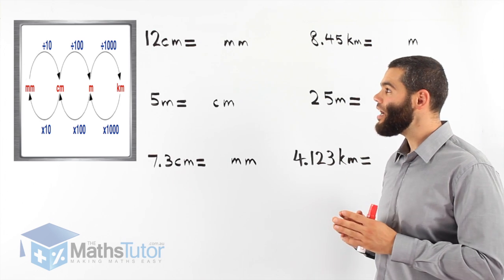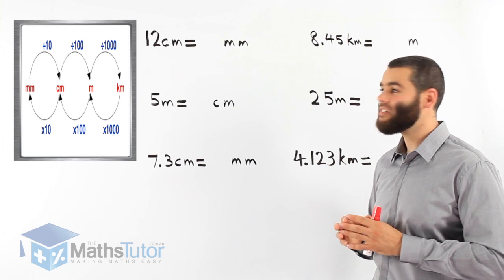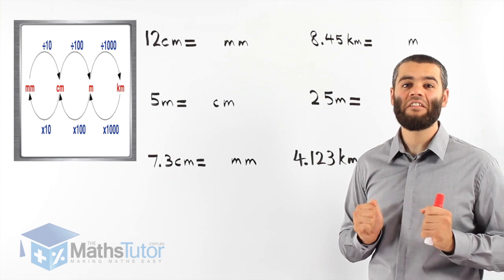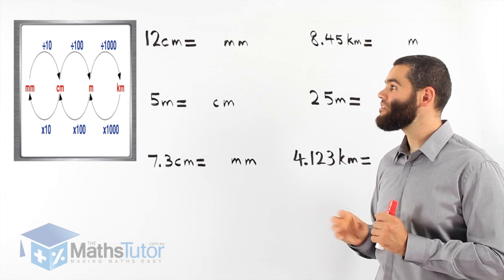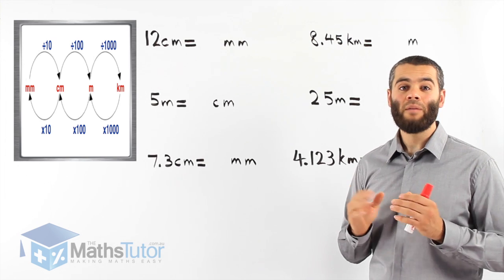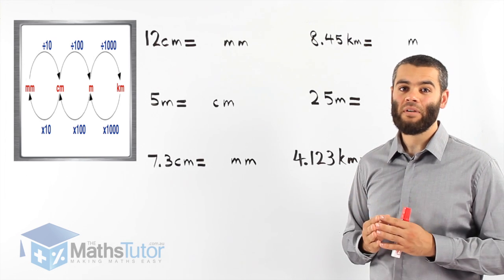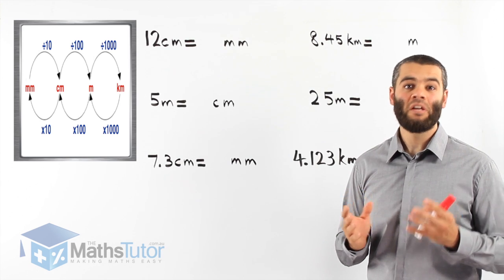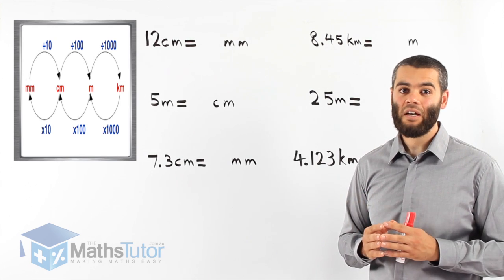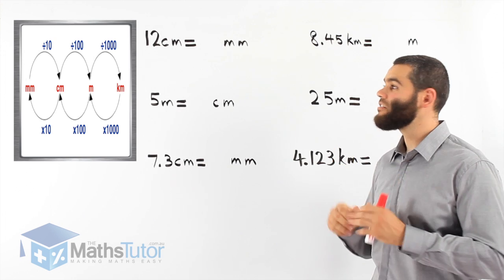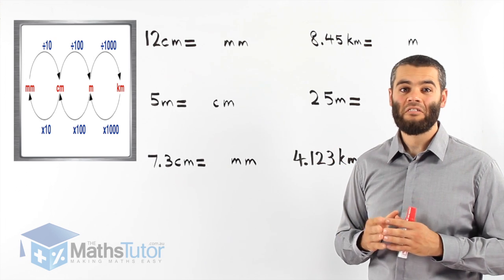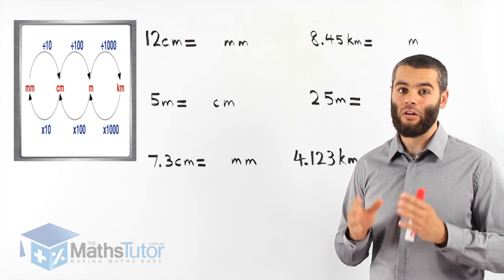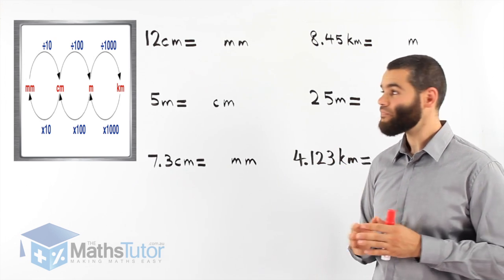Now you may ask, why is it 10, 100, or 1,000? Because there are 10 millimetres in a centimetre, there are 100 centimetres in a metre, and there are 1,000 metres in a kilometre.